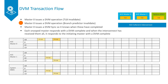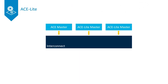DVMs are used to support the maintenance of a virtual memory system. We look at how ACE is used with DVM transaction flows. Finally, ACE Lite is used by system components that do not have local caches but still need access to shared data. This course shows how these components are supported, and how some ACE Lite masters can provide DVM support with the addition of extra channels.